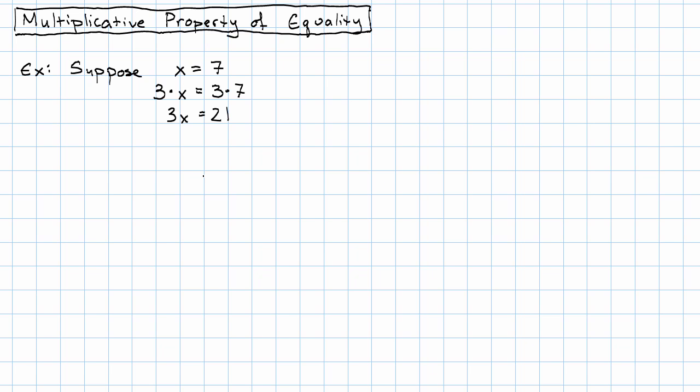Let's try it with a slightly more complicated equation. Suppose that we know that 2x plus 1 equals 5. And we decide to multiply both sides of this equation by 4. Then we'll have 4 times the expression 2x plus 1 equals 4 times 5.